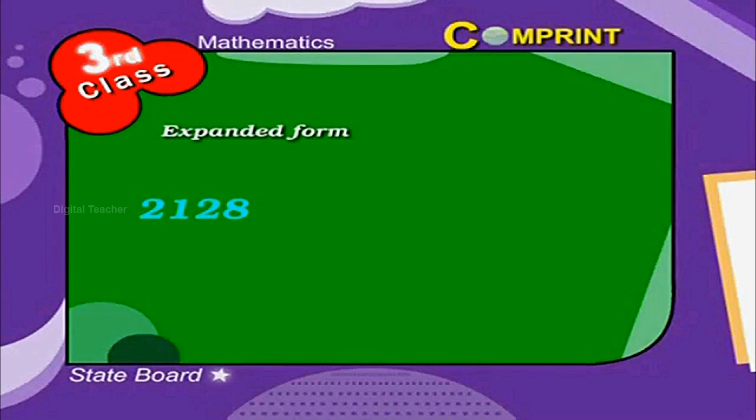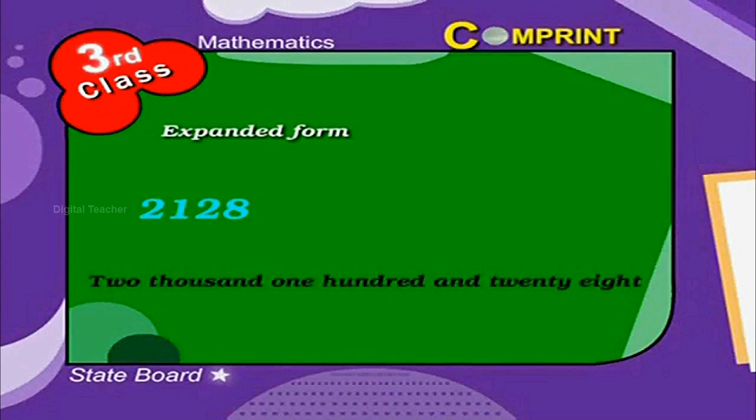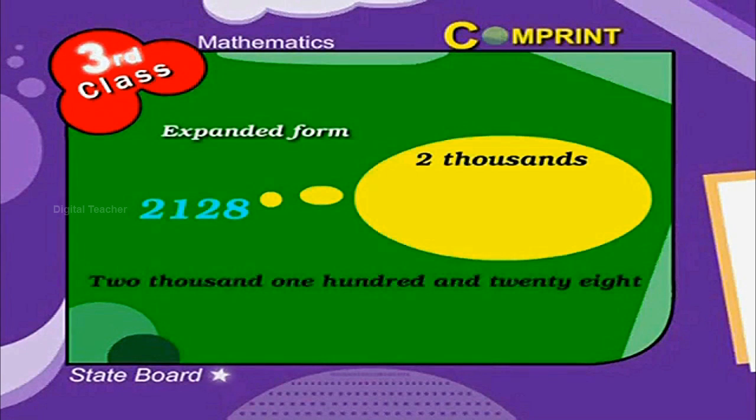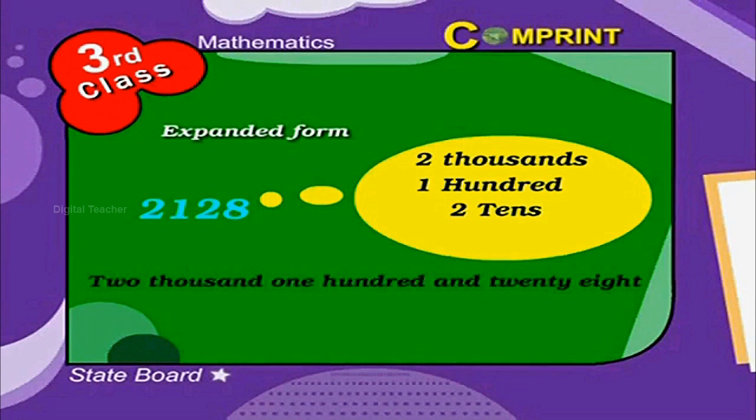In another example, 2128. We get 2 thousands, 1 hundred, 2 tens, and 8 ones.